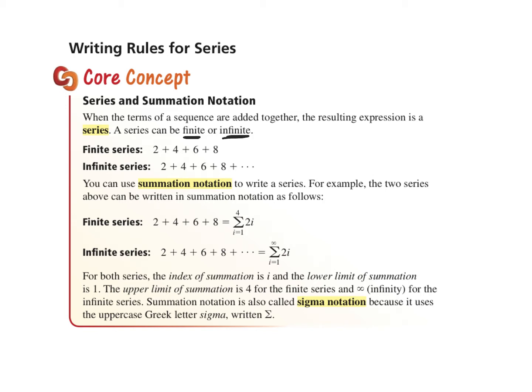A finite series has a starting and a stopping point, and we just add everything together. An infinite series has a dot, dot, dot, which means it keeps on going. We use summation notation to write a series — the two series above can be written in summation notation as follows.